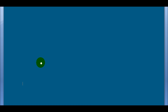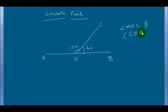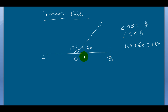Second: linear pair. After adjacent angles, I am now telling about the linear pair. Two angles — here angle AOC and angle COB — will be a linear pair if the sum of these two angles equals 180 degrees. For example, if angle AOC is 120 degrees and angle COB is 60 degrees, they add up to 180 degrees, so these two angles AOC and COB form a linear pair.